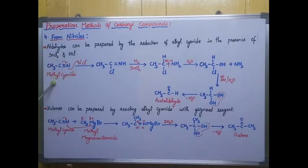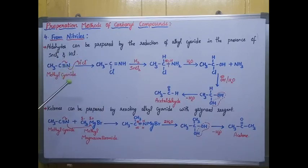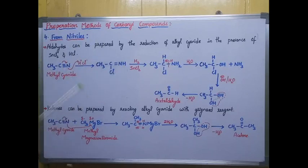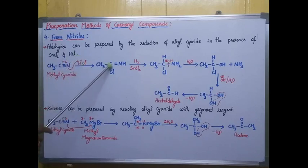In order to prepare aldehyde, I take methyl cyanide and reduce it in the presence of stannous chloride (SnCl2) and HCl. HCl breaks into H+ and Cl−. I break the triple bond: nitrogen gets a negative charge and carbon gets a positive charge. The negatively charged nitrogen attracts the positively charged hydrogen, forming an N–H bond, and the positively charged carbon attracts Cl− forming a C–Cl bond.